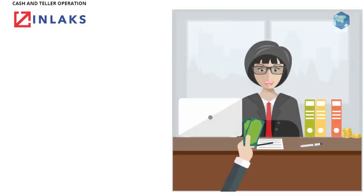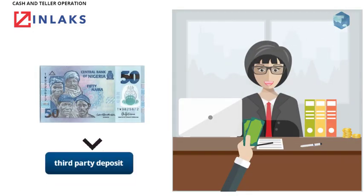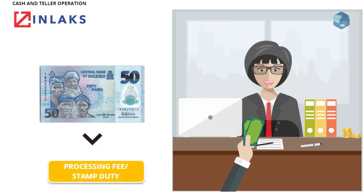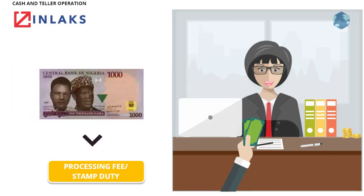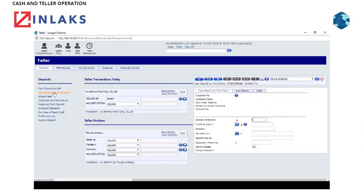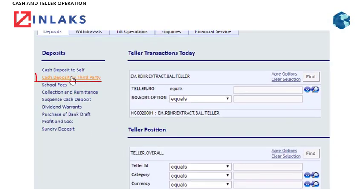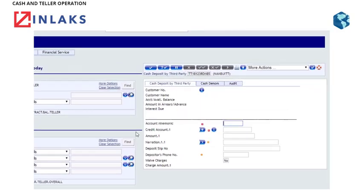Third Party Deposit or Stamp Duty. Please be advised that there is a charge of 50 Naira on a third party deposit. This charge is called the Processing Fee or Stamp Duty and it is active only if the deposit amount is 1,000 Naira and above. Step 1: Click on Cash Deposit by Third Party.